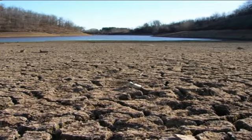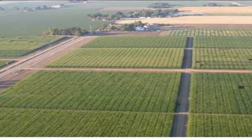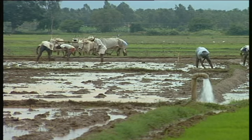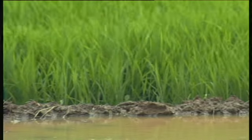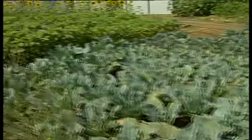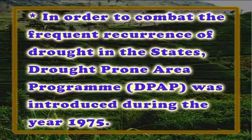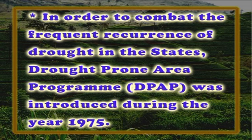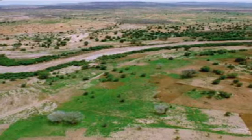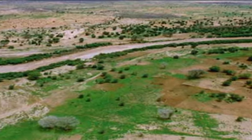Next are drought-prone regions. To minimize the adverse effects of drought on the production of crops, livestock and productivity of land, water and human resources with drought-proofing techniques, and to promote overall economic development and improve the socio-economic conditions of vulnerable groups. In order to combat the frequent recurrence of drought in the states, the Drought Prone Area Program, that is DPAP, was introduced during the year 1975. The program concentrated on non-arable lands.